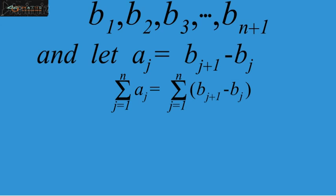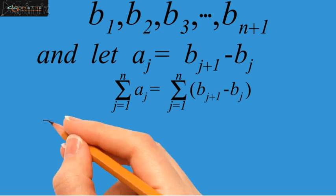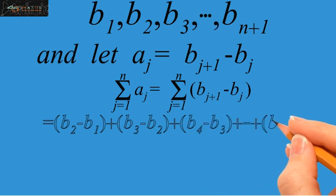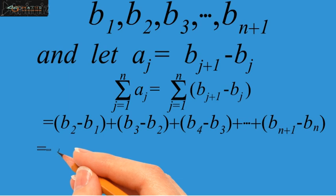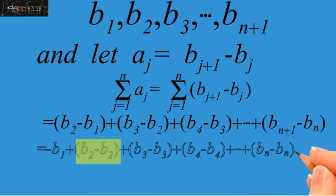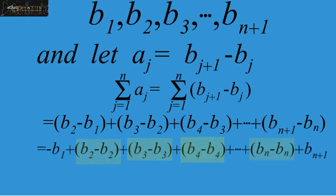We have, now in the right hand side, we use the definition of summation. So, applying this, we have, now rearranging the terms. We see that the terms in the parentheses cancel each other. And finally, we are left with bn plus 1 minus b1.